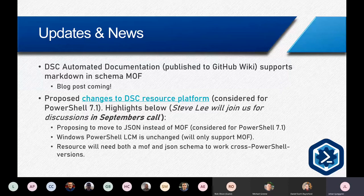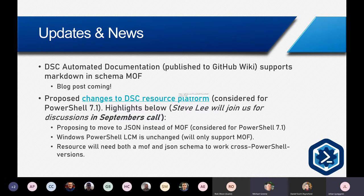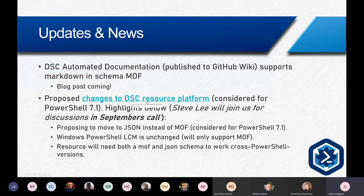The biggest news is the proposed changes to the DC resource platform that Steve Lee created an issue for — there's a link in the chat. It's considered for PowerShell 7.1, and we have asked Steve Lee to join us in the next call in September to discuss these changes.